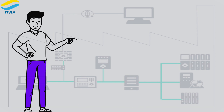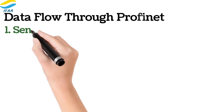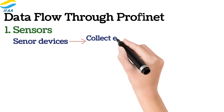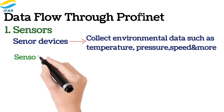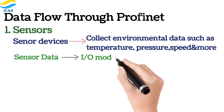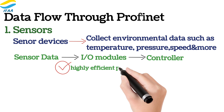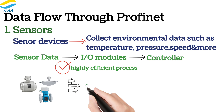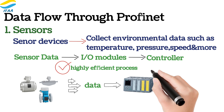Now let's talk about how data flows through a PROFINET system. The first type of data flow begins with the sensors. These devices continuously collect environmental data such as temperature, pressure, speed, and more. The sensor data is sent to I/O modules, which then forward the data to the controller. This is a highly efficient process with data being exchanged in real-time, often in cycles as short as a few milliseconds. Sensors detect changes in real-time, feeding this data to the controller so that it can make decisions quickly.